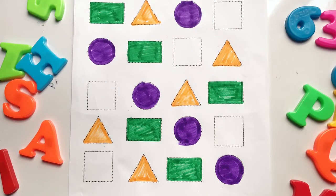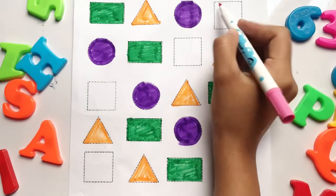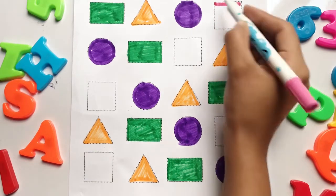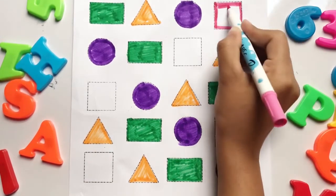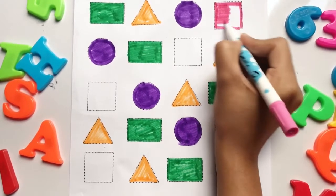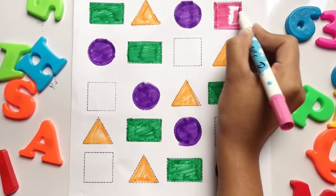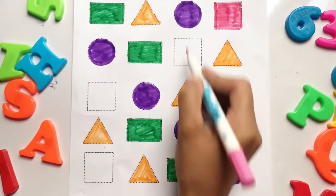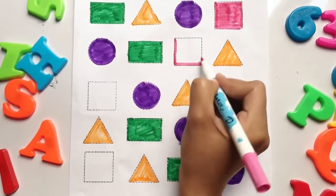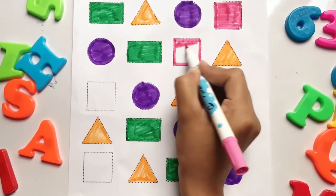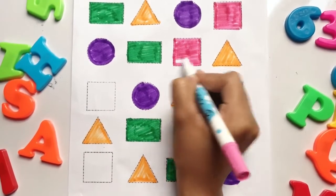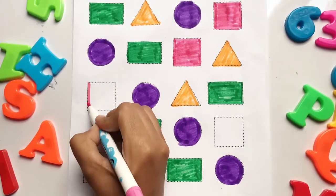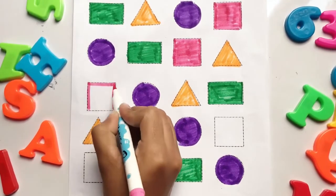Now let's fill pink color in all the squares. One square. Two square. Three square.